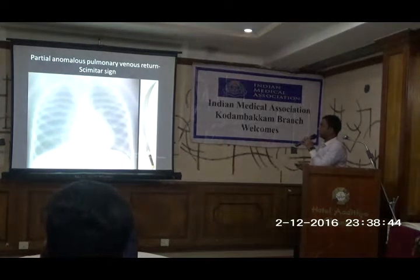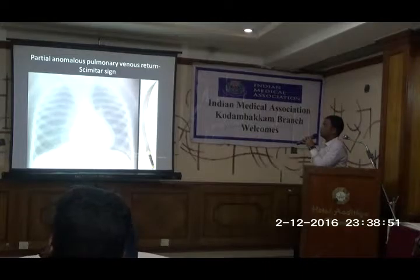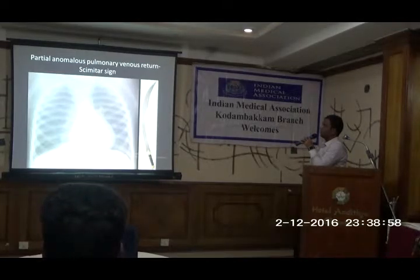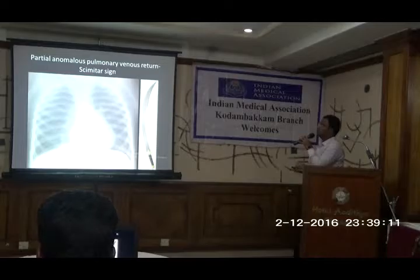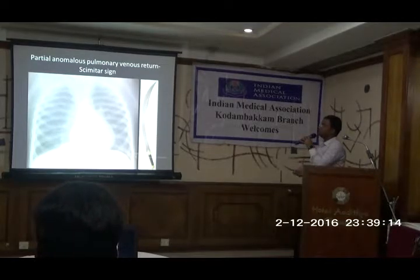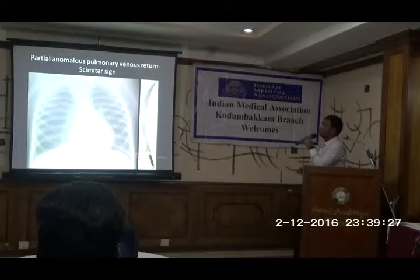This is called the Scimitar sign. The name is Turkish — it is a sword/swan shape. You will have a small paracardiac curvilinear opacity extending below the diaphragm going up to the hilum level. This is because of partial anomalous pulmonary venous drainage (PAPVD). Normally all pulmonary veins empty into the left atrium. In this partial anomaly, only one vessel has abnormal venous drainage — it enters the systemic circulation going into the IVC instead of the left atrium. That is why you will have this appearance called Scimitar syndrome, otherwise called hypogenetic lung syndrome.